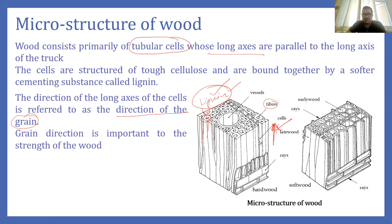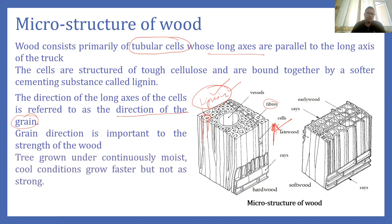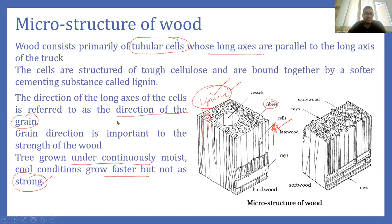If a tree grows under continuously moist conditions, it grows faster but will not be the strongest. This is an important fact associated with the strength of timber. We study the cross section and microstructure of wood to understand the strength phenomena of timber.